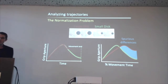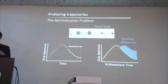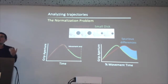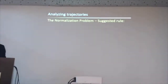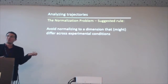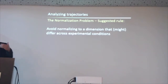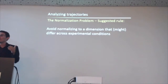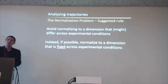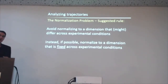This is a very important problem. If I ever review one of your papers and you do time normalization, you better convince me that time was not different between your conditions — because otherwise you're introducing known contaminants into your data. My suggested rule: first of all, avoid normalizing to a dimension that might differ across experimental conditions, and certainly do not normalize to one where you're reporting differences. So if you have movement type differences, do not time normalize because you're going to be introducing errors into your spatial trajectory analysis. Instead, if possible, normalize to a dimension that's fixed across experimental conditions.